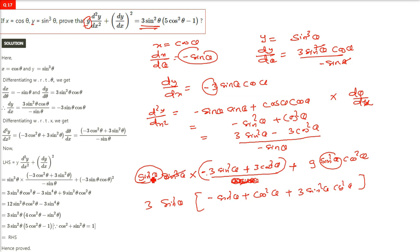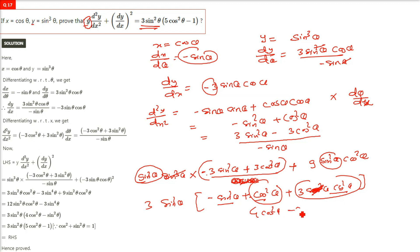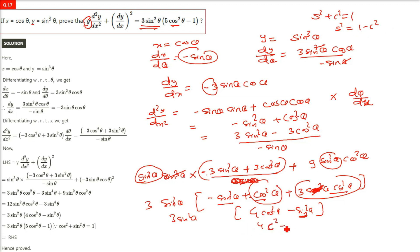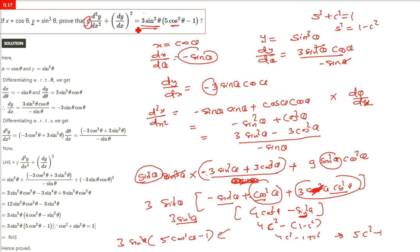The sine square theta has been taken out, so we cancel it. We have cos square theta plus 3 cos square theta giving 4 cos square theta, minus sine square theta. Using the identity sin²θ + cos²θ = 1, we replace sine square theta with 1 minus cos square theta. So 4 cos square theta minus (1 minus cos square theta) gives 5 cos square theta minus 1. With 3 sine square theta in front, the right hand side is 3 sine square theta times (5 cos square theta minus 1). This is the proved result.